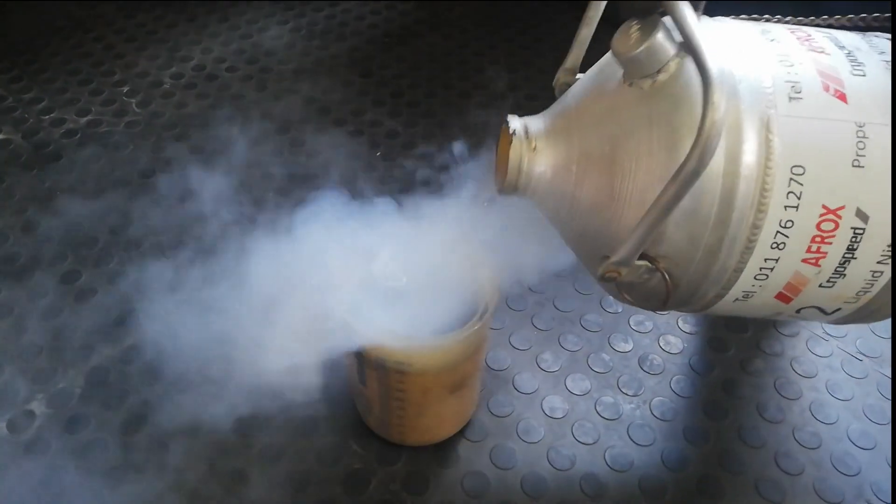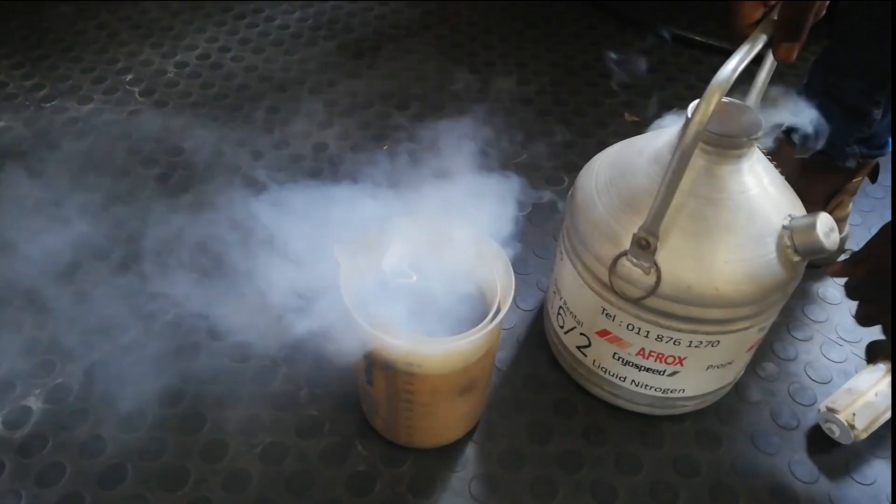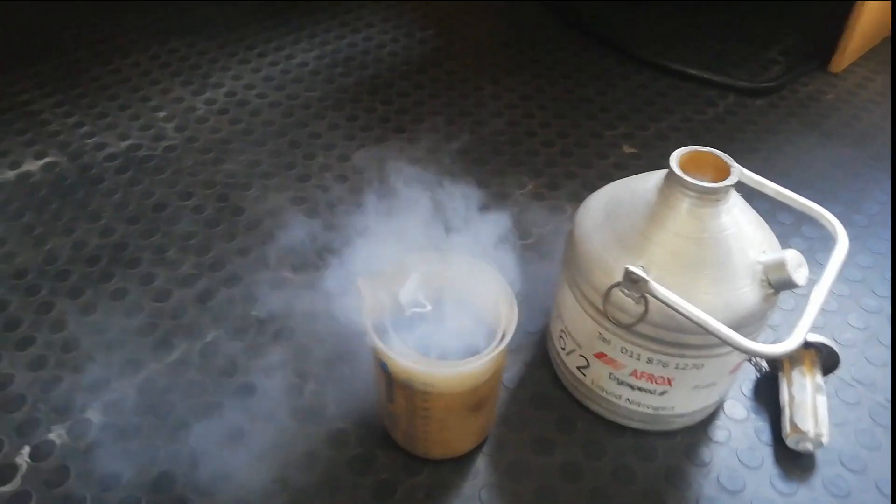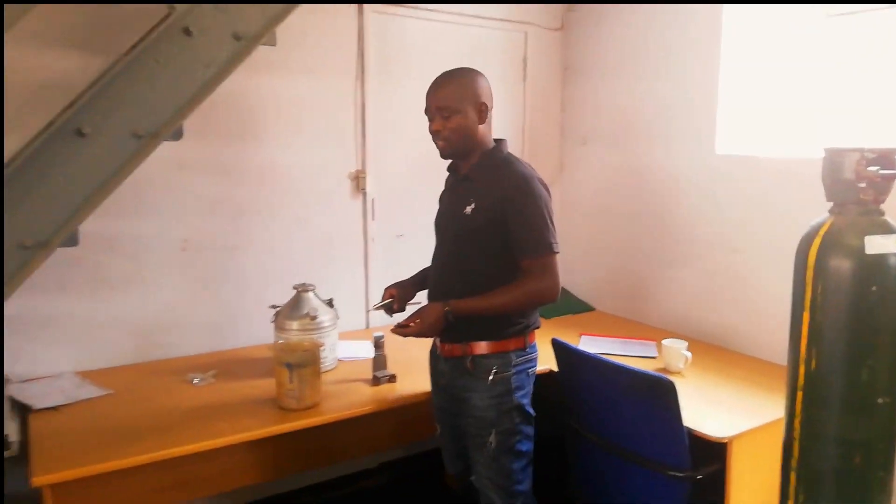In here, we're going to perform Charpy Impact Test at the temperature of minus 196 degrees Celsius. And for that, we're going to soak our test piece in liquid nitrogen and maintain the temperature for 10 minutes.